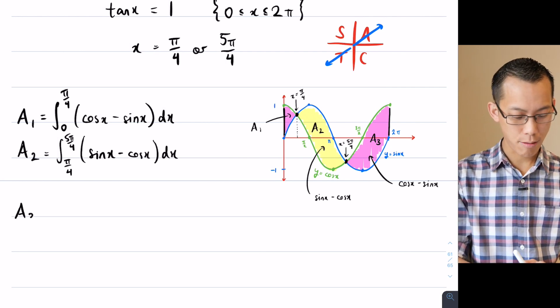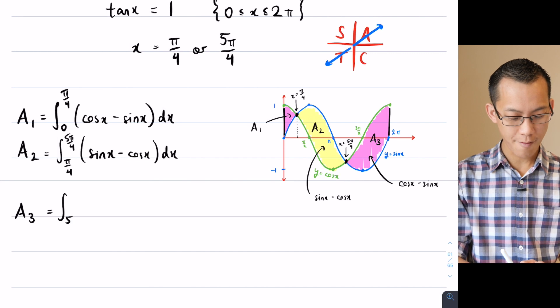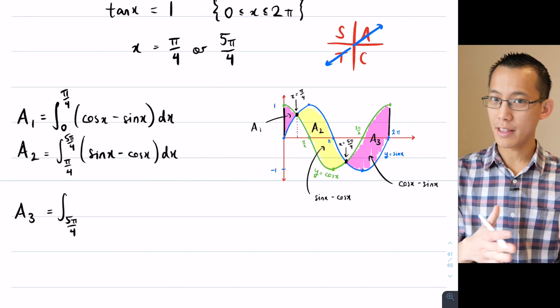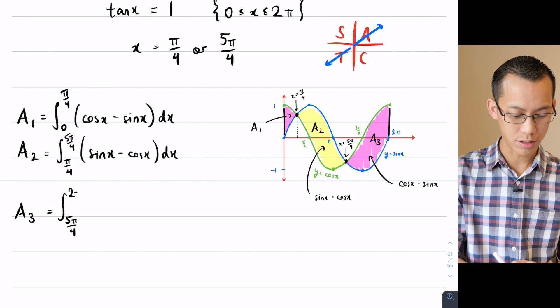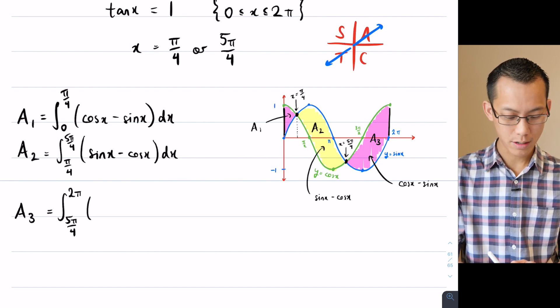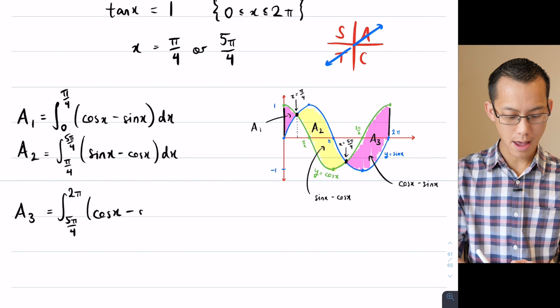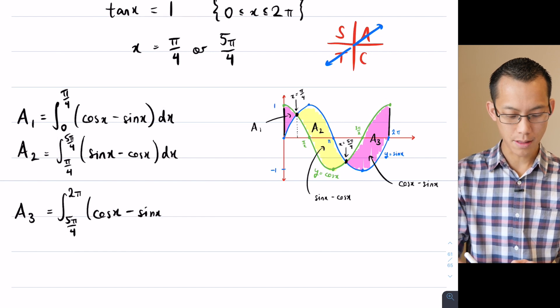The last one is A₃, which takes over at 5π on 4 and then ends at the very end of the domain, which in the question was defined as 2π. Then we return, like A₁, to cos being on the top and sine being on the bottom.